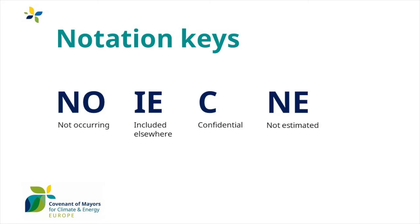This is for instance the case of the ETS — the Emission Trading System. Third, C — confidential. This notation key can be used when greenhouse gas emissions could lead to disclosure of confidential information. This could be the case for military operations or industrial facilities.